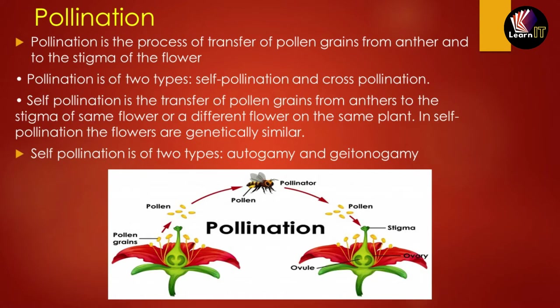Self-pollination is the transfer of pollen grains from the anther to the stigma of the same flower or different flowers on the same plant. In self-pollination, all the plants will be genetically similar. It has two types: autogamy and geitonogamy.